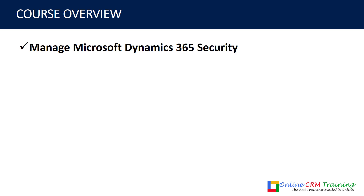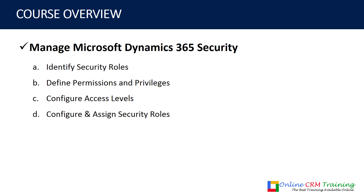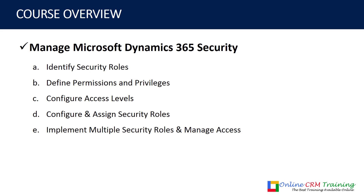Once you complete that, the next module is the Dynamics 365 Security Model. First you will identify security roles — what they are and how they can be useful. Then you will learn how to define permissions and privileges, and how to configure access levels. There is a difference between privileges and access levels and we will cover that in detail practically. You will also learn how to configure and assign security roles to users, because without an assigned security role a user will not be able to access the Dynamics 365 application.